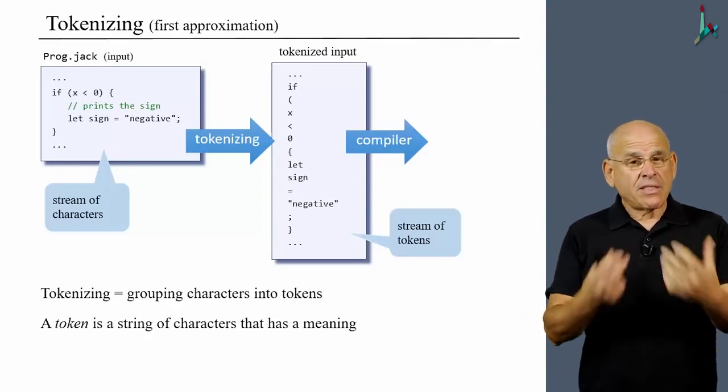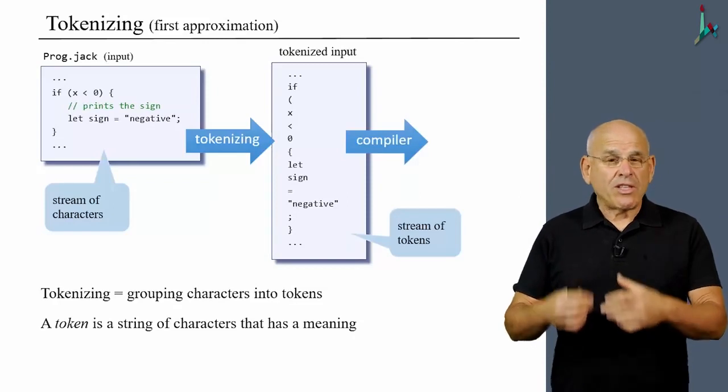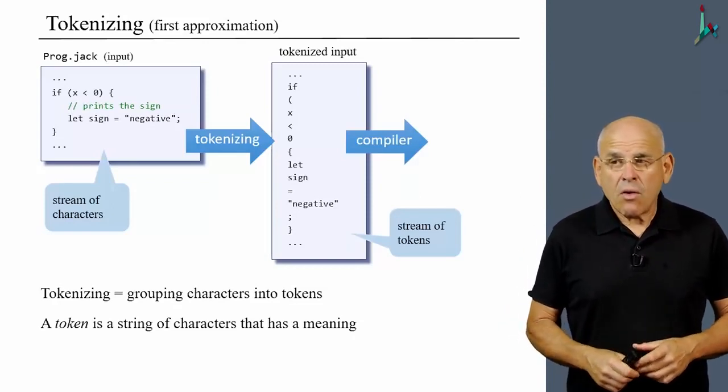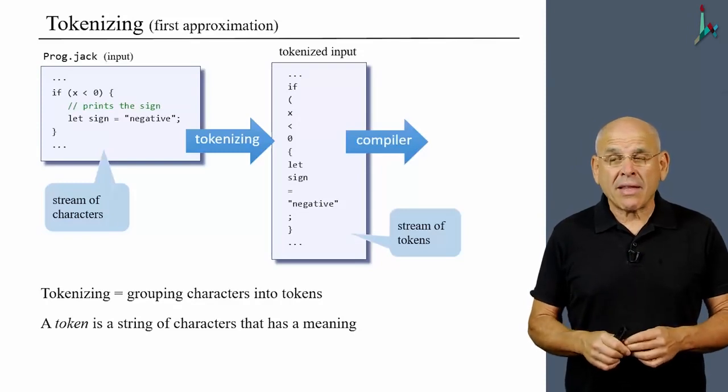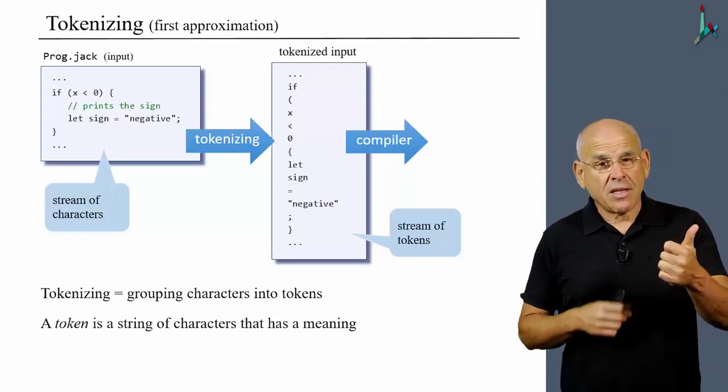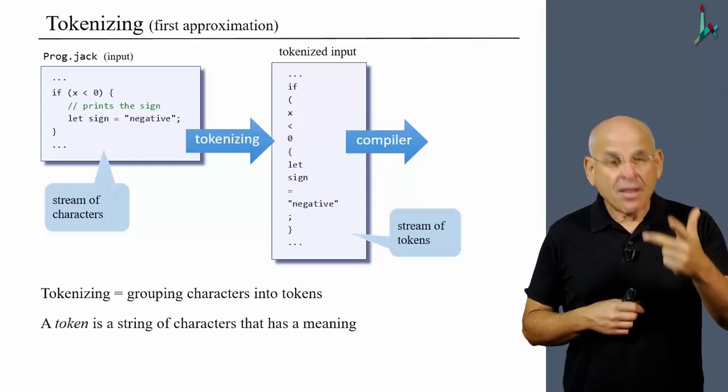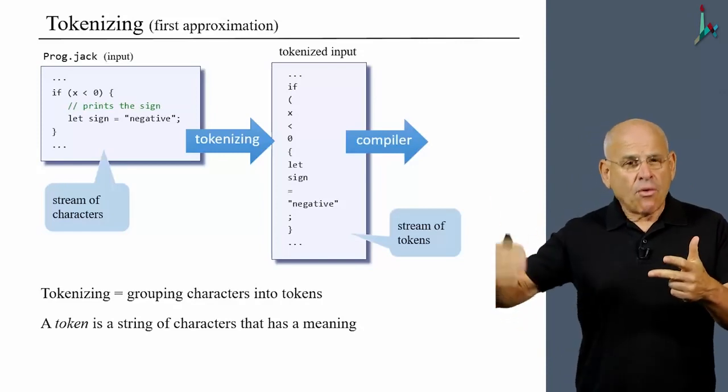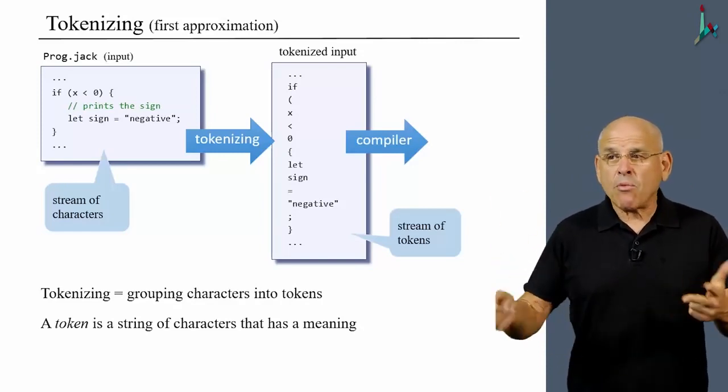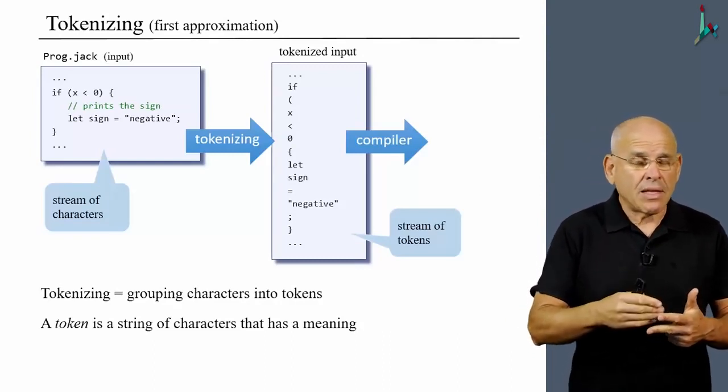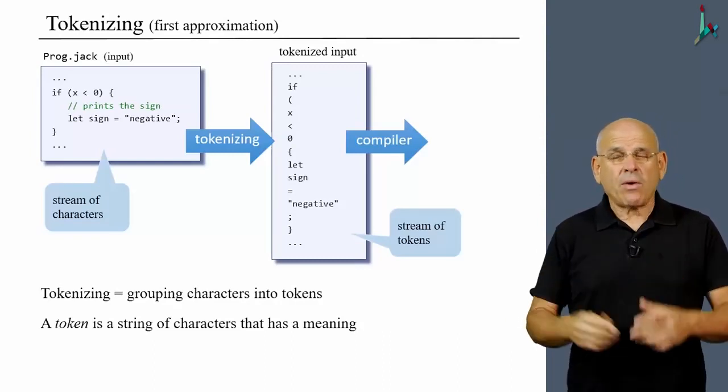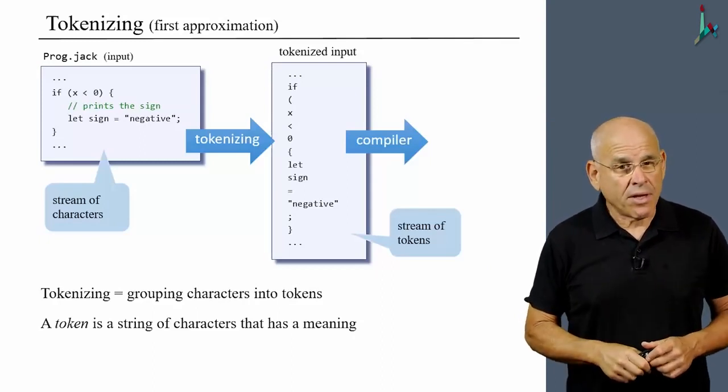However, the very same input, if we give it to a Jack tokenizer, will not make sense. Well, it will make sense as far as tokens go because we'll get the three tokens x, plus, and another plus. And then later on in the compilation process, someone is going to raise a red flag and say you cannot have a plus immediately after another plus, because in the Jack language there is no plus plus operator.